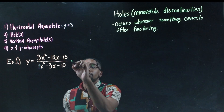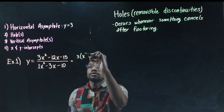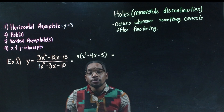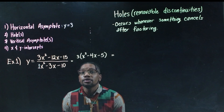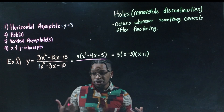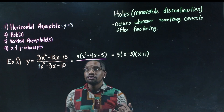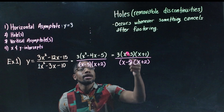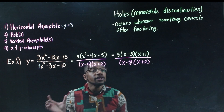In the numerator, I notice a greatest common factor of 3, so I factor that out first. Inside the parentheses I have a trinomial — two numbers that multiply to negative 5 and add to negative 4: negative 5 and positive 1. For the denominator, two numbers that multiply to negative 10 and add to negative 3: negative 5 and positive 2. Looking at the fully factored function, I see x minus 5 on top and x minus 5 on bottom — those cancel, giving a removable discontinuity.